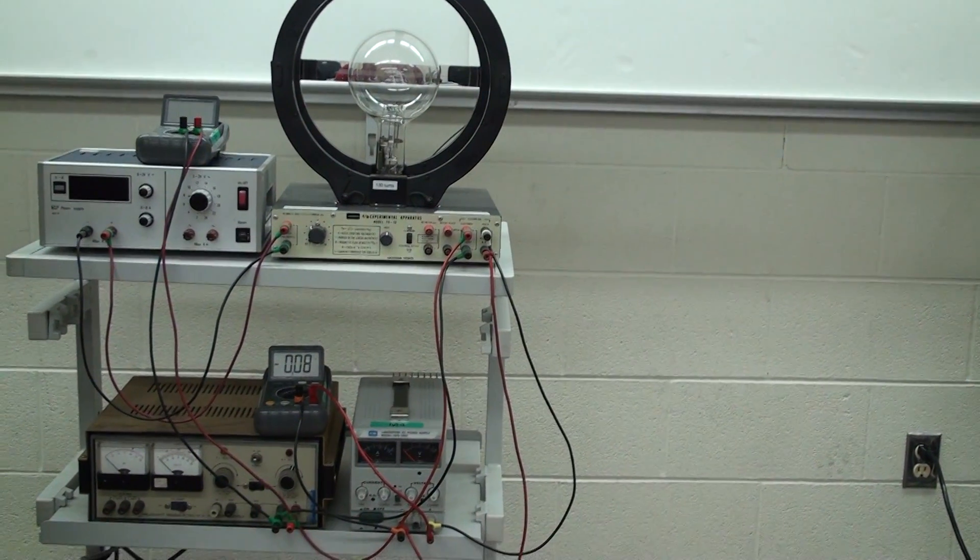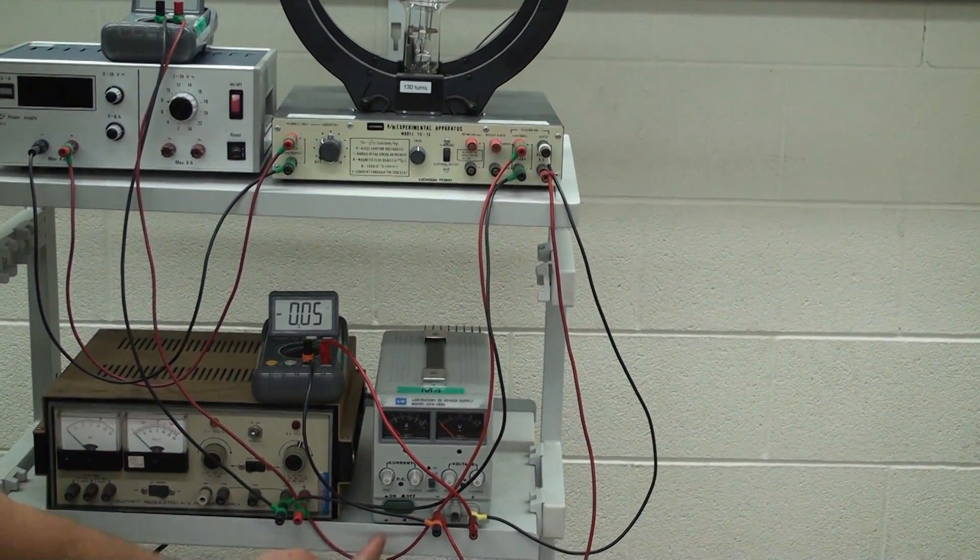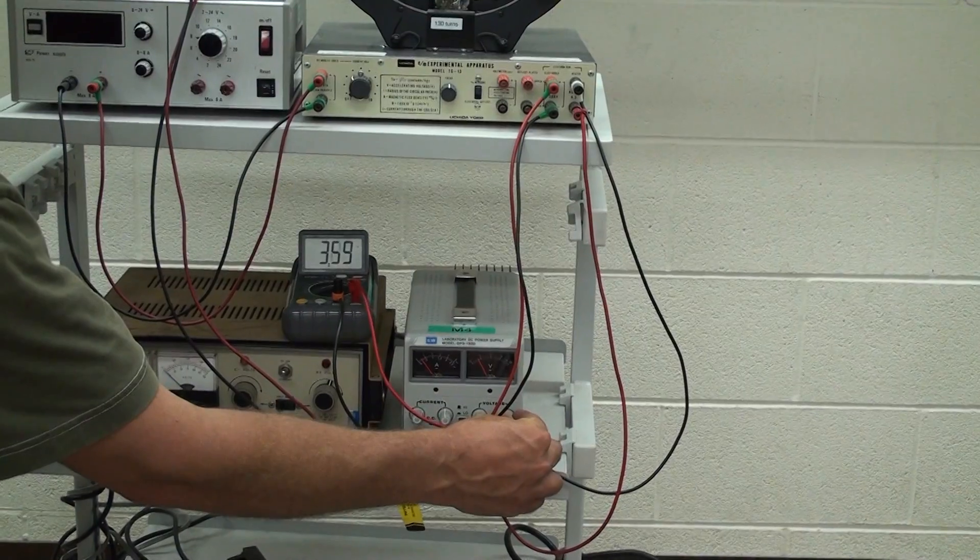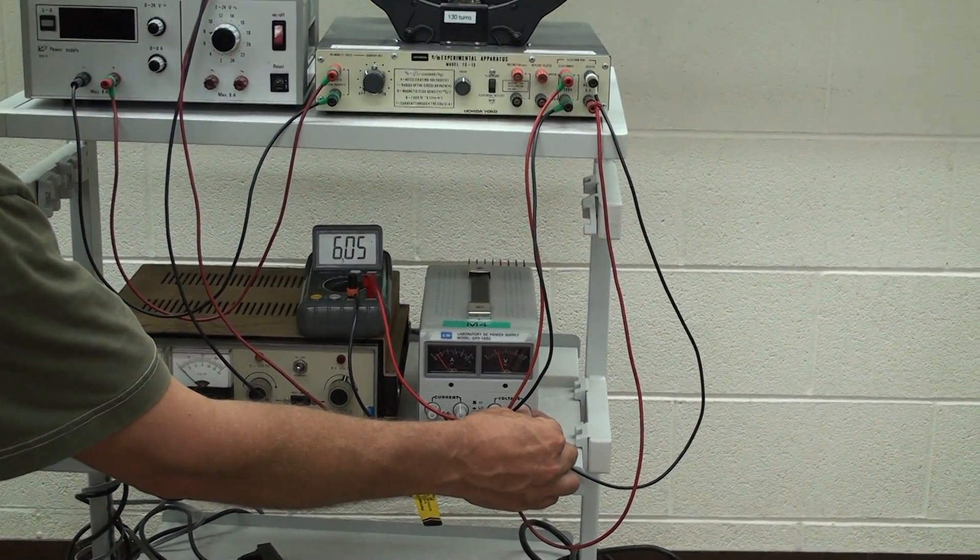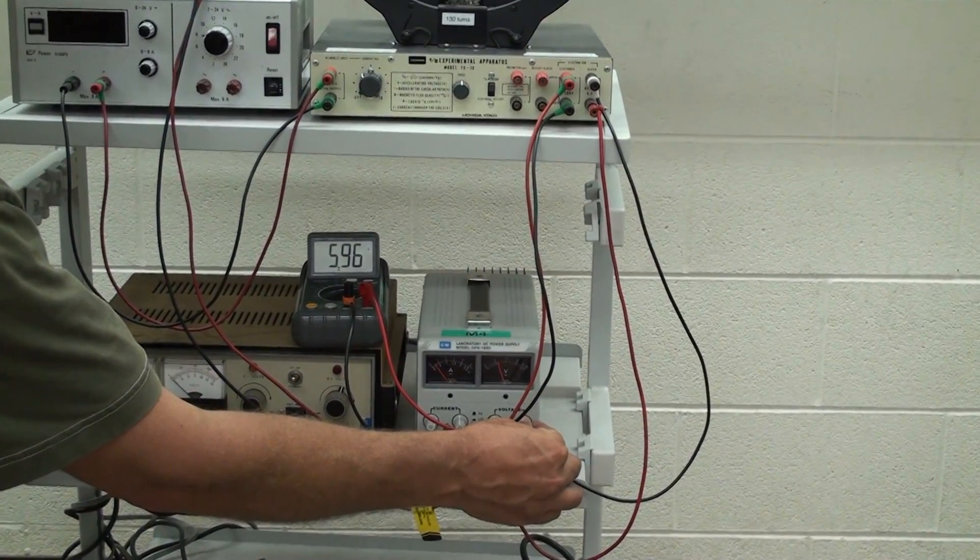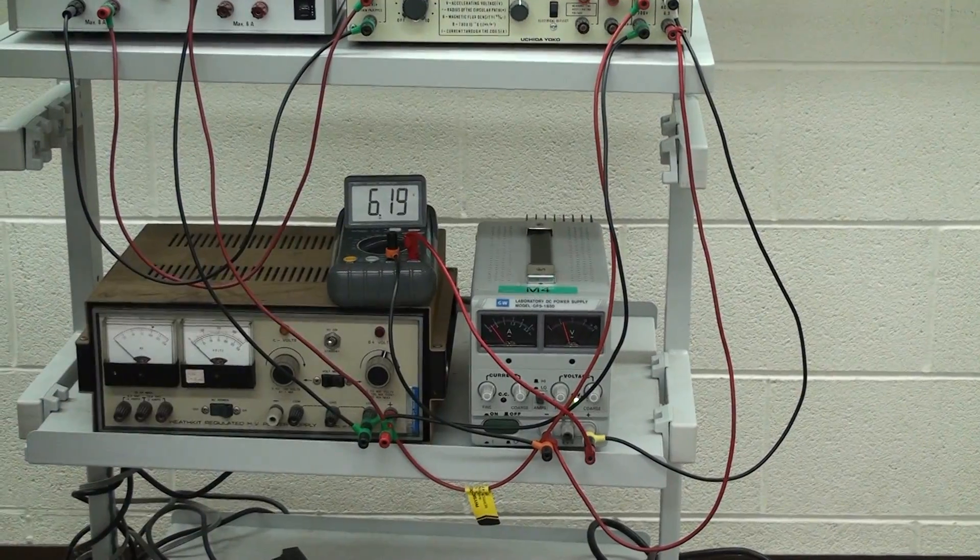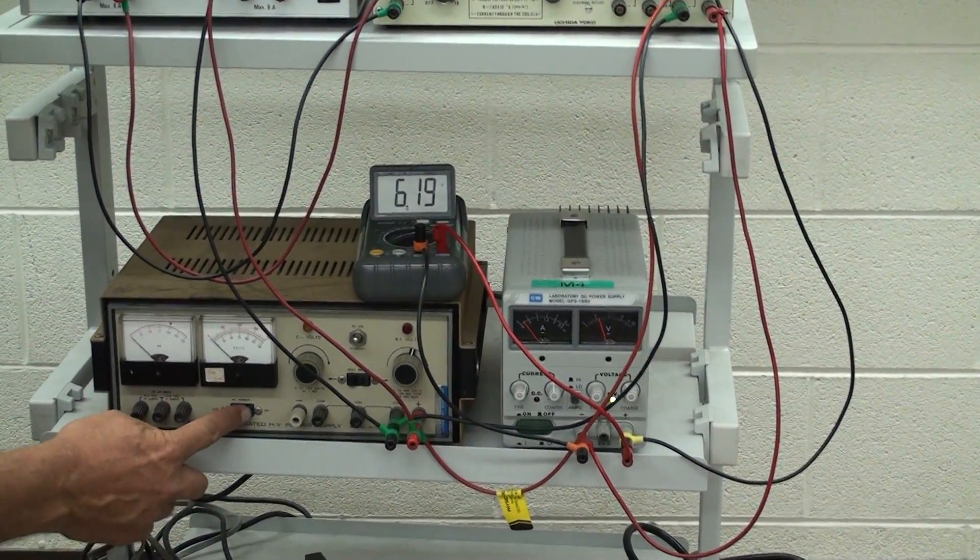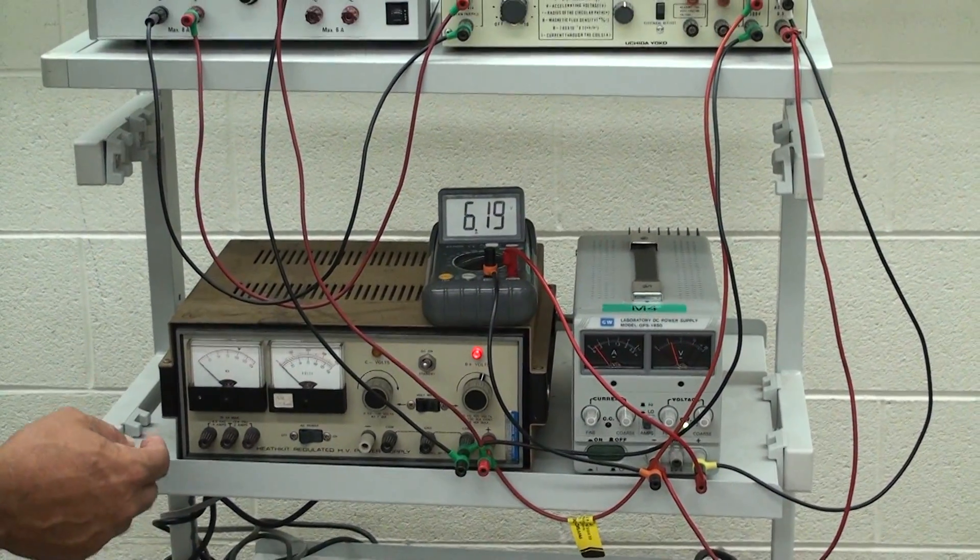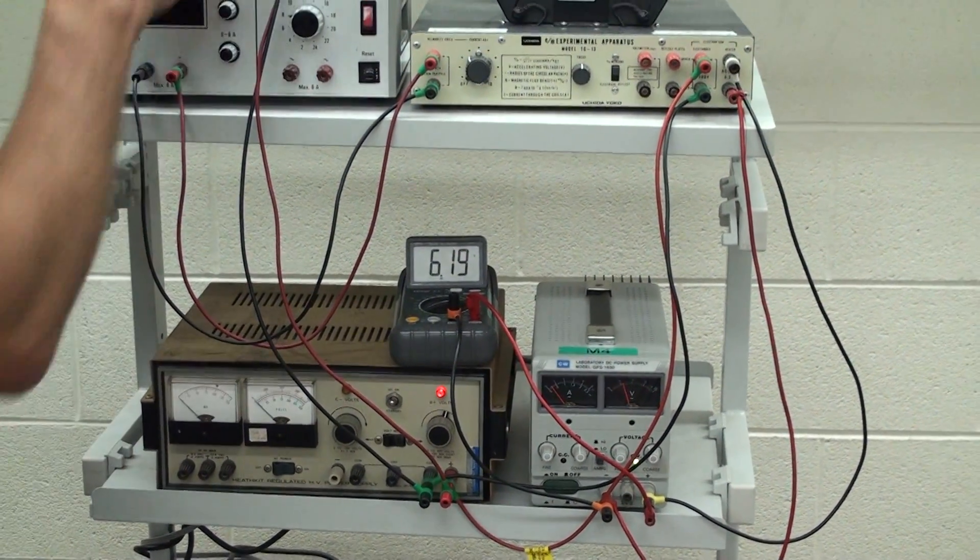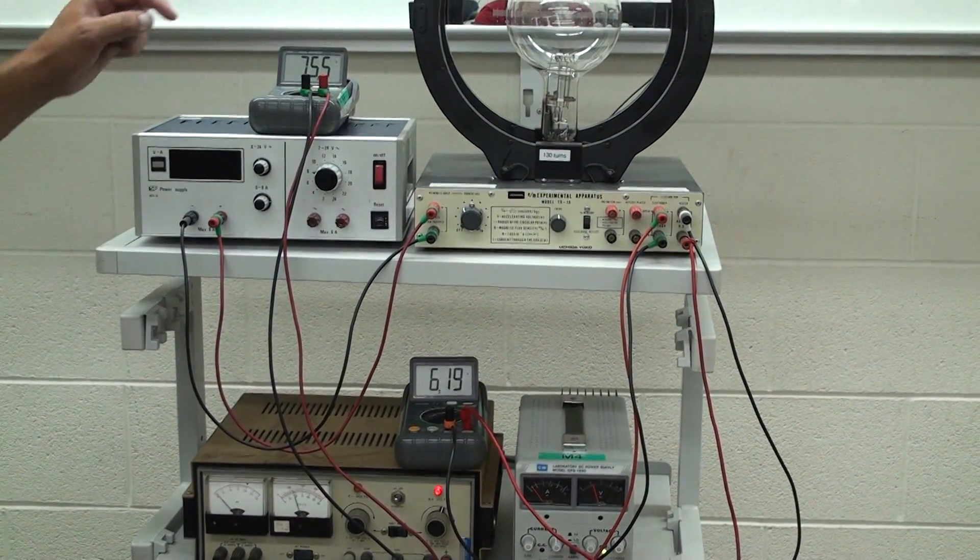We begin by applying a limited voltage to the wire filament, which when heated boils off electrons from the wire. Under no circumstances should this voltage ever exceed 6.3 volts or the costly device will be ruined. Now apply a large accelerating potential, capital V, about 150 volts, to fire the electrons horizontally from left to right out of the electron gun. This voltage should be recorded with the voltmeter.